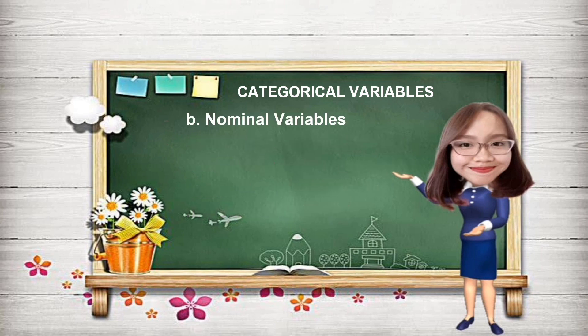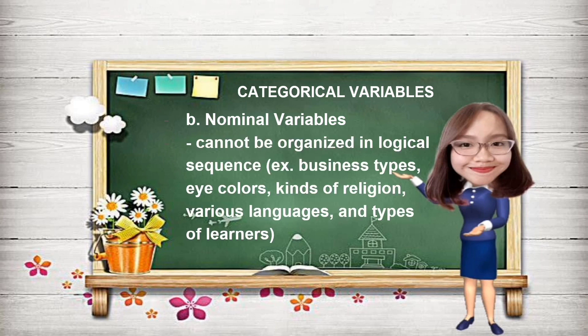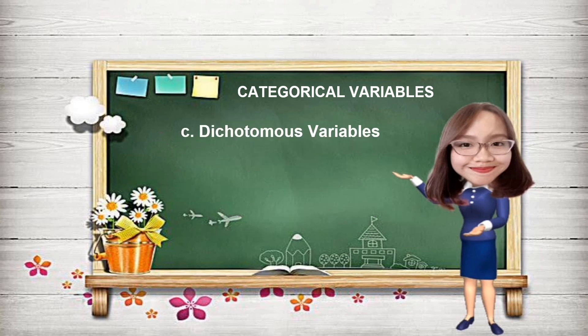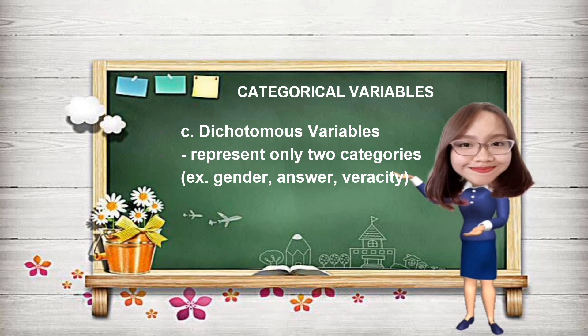Another type of variable under this classification are nominal variables. These are variables whose values cannot be organized in a logical sequence. Some examples are business types, eye colors, kinds of religion, various languages, and types of learners. Dichotomous variables are also under this classification — these variables represent only two categories. Some examples are gender (male and female), answer (yes or no), and veracity (true or false).